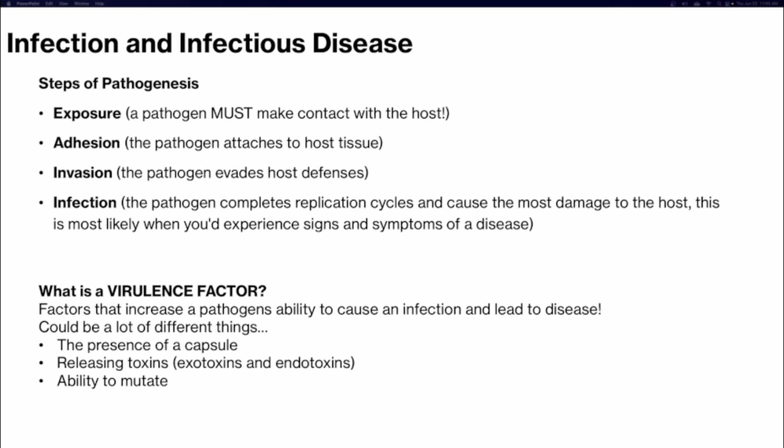A virulence factor increases a pathogen's ability to cause infection and lead to disease. Virulence factors include things pathogens use to evade your immune system or attach more effectively — such as the presence of a capsule to prevent being phagocytized by white blood cells, the release of toxins, or the ability to mutate over time to avoid being flagged by antibodies you've made to detect it.